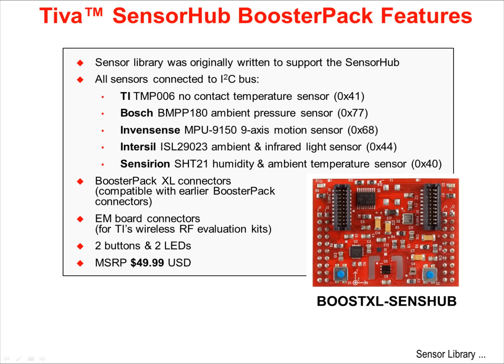The sensor library was originally written to support the SensorHub booster pack. This booster pack has five separate sensors, all connected to the I2C bus. The sensors include an infrared temperature sensor, an ambient pressure sensor, a nine-axis motion sensor, an ambient and infrared light sensor, and a humidity and ambient temperature sensor. This booster pack can be purchased using the part number shown at the lower right.